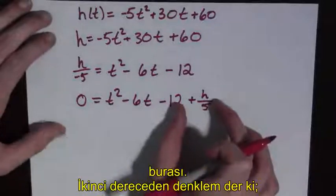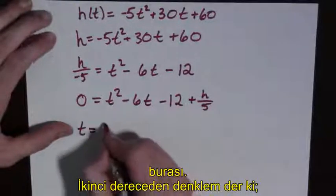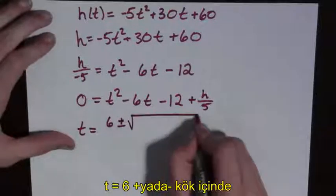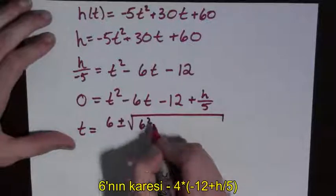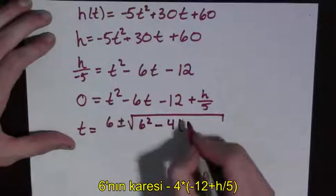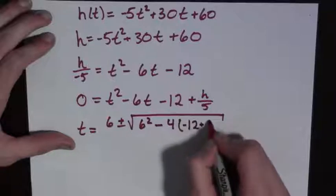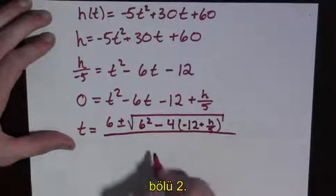Remember, this is the constant term, by the way. So the quadratic formula says that t is equal to 6 plus or minus the square root of 6 squared minus 4 times a is 1 times negative 12 plus h over 5, all over 2.